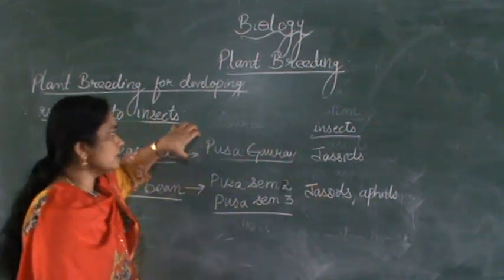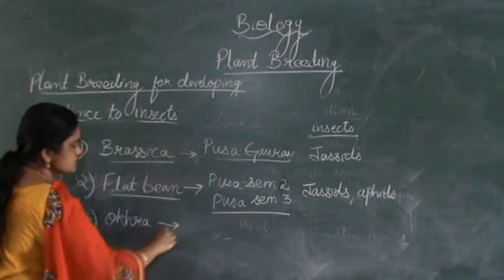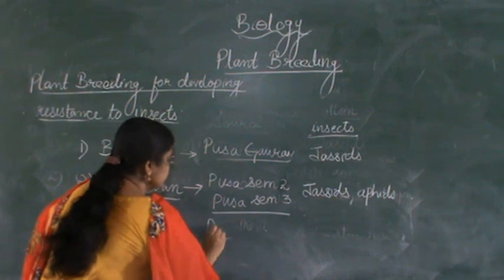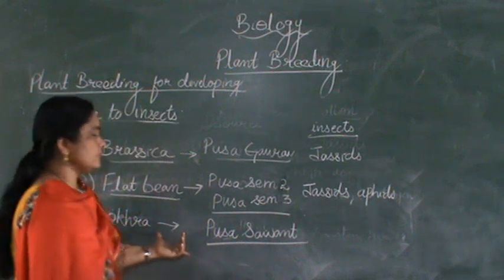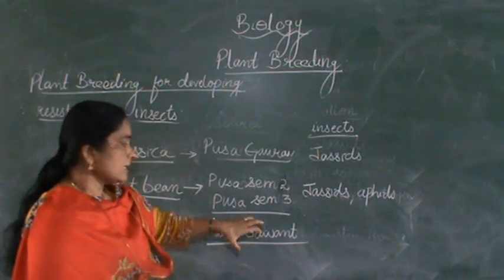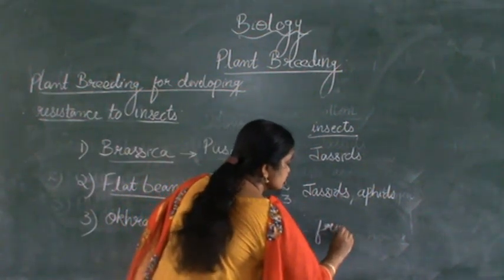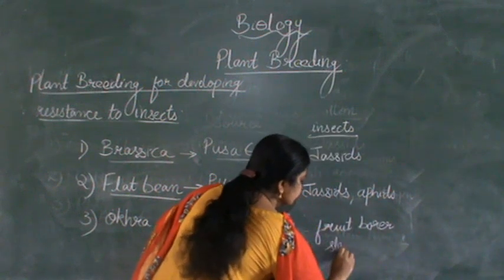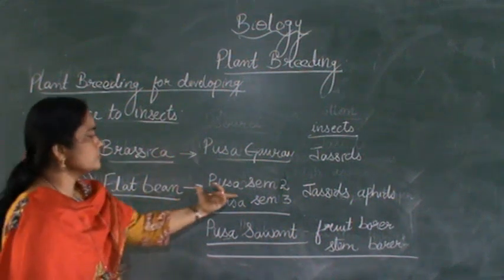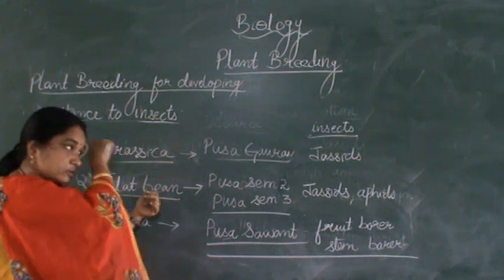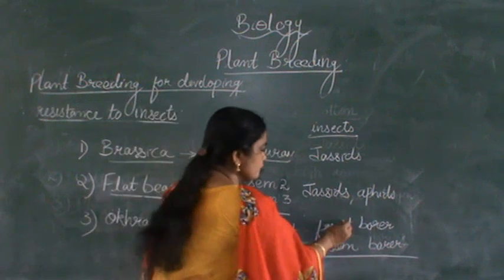Another variety is Okra — Okra is nothing but Bhindi or Lady's Finger. The variety developed in India is Pusa Sawani. When you grow Lady's Finger, the stem or the fruit may be infected by insects, so the insects towards which it develops resistance are fruit borer and stem borer. To summarize: Pusa Gaurav is a variety of mustard; Pusa Sem 1, 2, and 3 are varieties of flat bean; and Pusa Sawani is a variety of Okra or Lady's Finger which develops resistance towards fruit borer and stem borer.